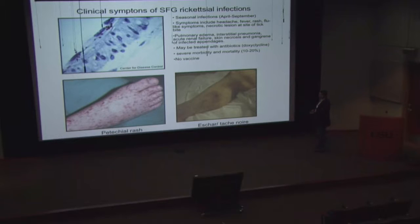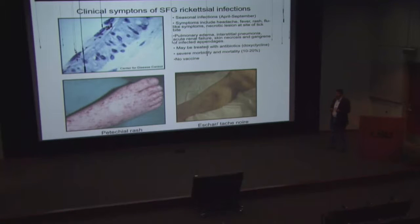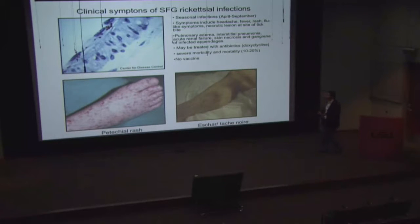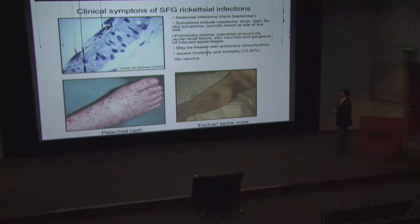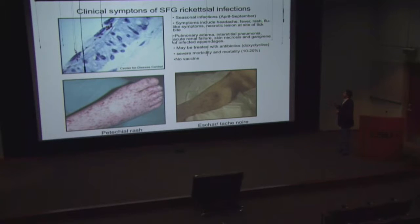When we get bitten by a tick, you don't get that itchy response, so you might not even know you've been bitten. The tick takes a blood meal, and through a mechanism that a colleague in our department, Dr. Kevin Macaluso, is trying to elucidate, the contents of that infected tick are transmitted into the mammalian host. Once that happens, it's a fairly vasculotropic disease, as can be depicted by this petechial rash — you get these micro-hemorrhages that go along from the extremities back to the trunk. The disease symptoms are very flu-like in nature, at least initially, and include headache, fever, rash, and other flu-like symptoms. It could also result in a necrotic lesion or eschar at the site of a tick bite, though this is not universal for every pathogenic rickettsial species.